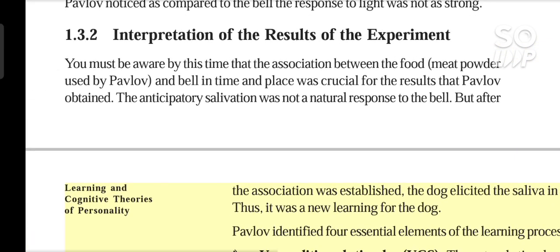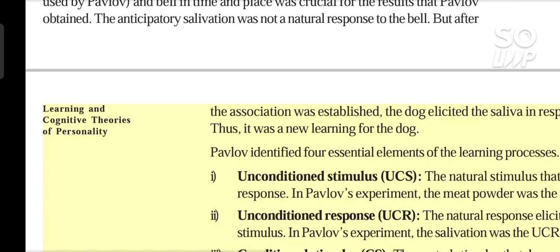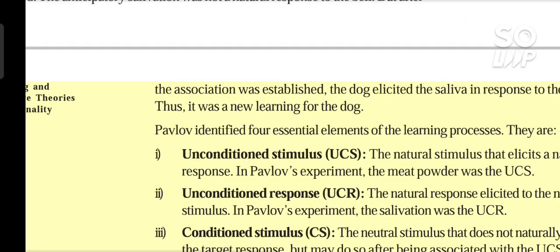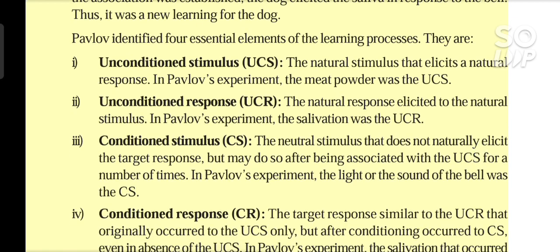Box 1 summary: Before conditioning — UCS: Food → UCR: Salivation; NS: Bell → No salivation. During conditioning — CS: Bell + UCS: Food → UCR: Salivation. After conditioning — CS: Bell → CR: Salivation. Where UCS = Unconditioned stimulus, UCR = Unconditioned response, NS = Neutral stimulus, CS = Conditioned stimulus, CR = Conditioned response.